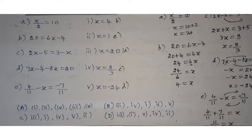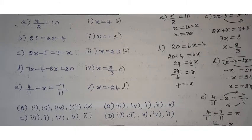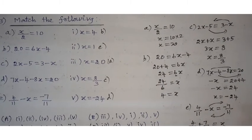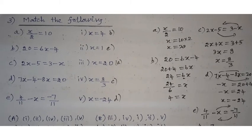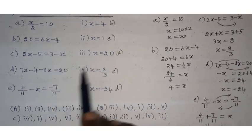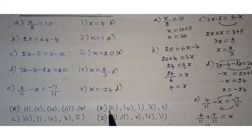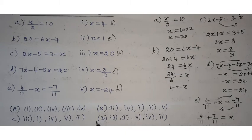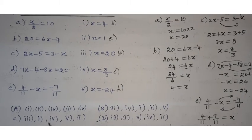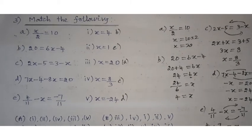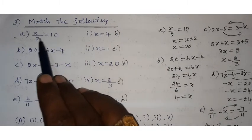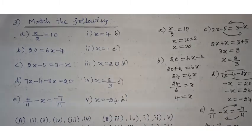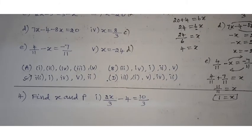Do not blindly copy the answer from the textbook — work out all the sums yourself so you get a clear idea. In the match the following, write the correct answer adjacent to each question. For example, x by 2 equals 10 — write 20 next to it. Fill-ins and match the following are now complete.